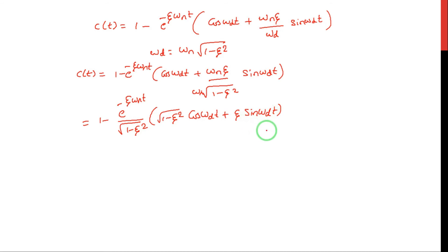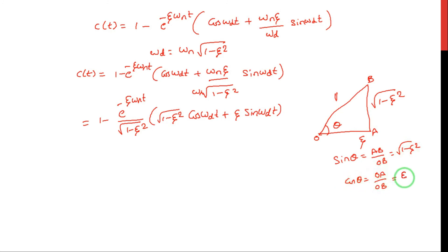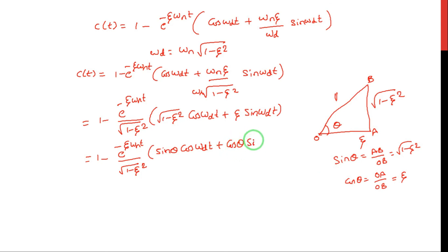To simplify further, I form a right triangle with one side equal to ζ, another side equal to √(1 − ζ²), and hypotenuse equal to 1. From this triangle, sin θ = √(1 − ζ²) and cos θ = ζ. Substituting sin θ for √(1 − ζ²) and cos θ for ζ, the expression inside the brackets becomes cos(ωdt)sin θ + sin(ωdt)cos θ, which matches the sin(A + B) = sinA cosB + cosA sinB formula.